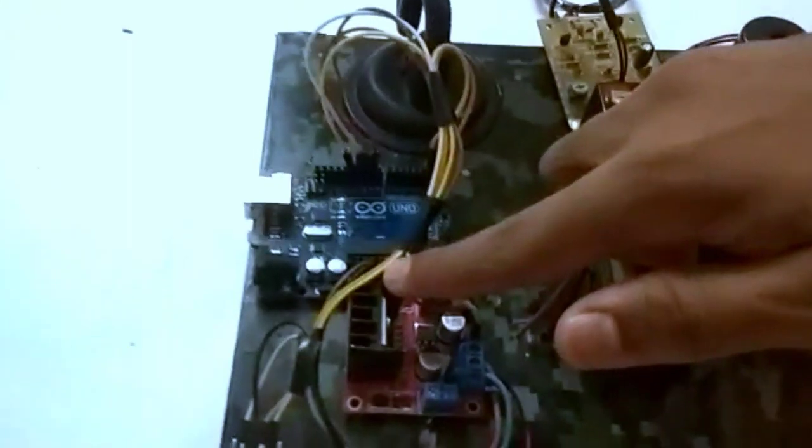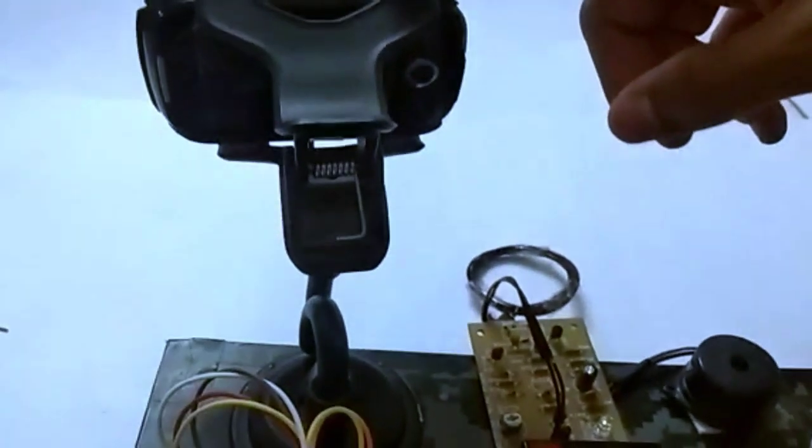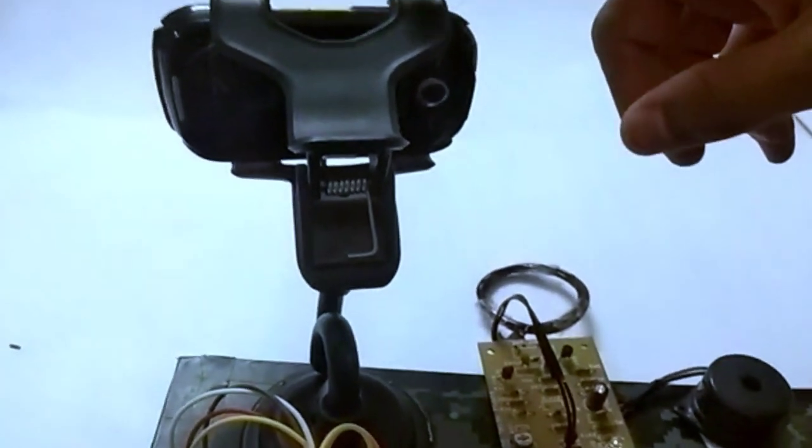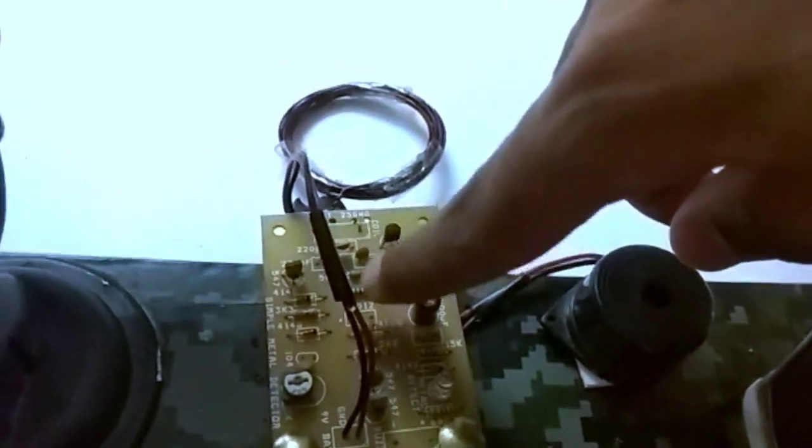Here's a Bluetooth circuitry of the robot by which we can control it through a phone. Here's a camera holder by which we can observe the movement of the robot. And here's a metal detector which helps in detecting metal and mines.